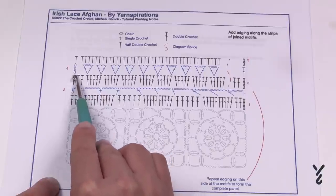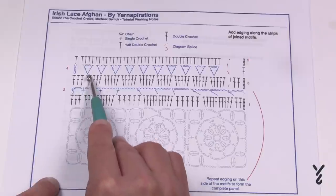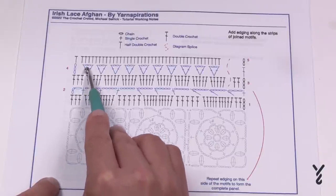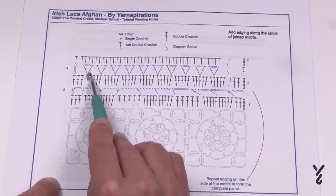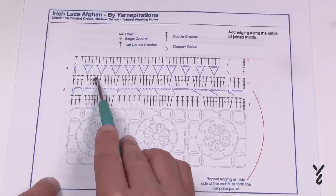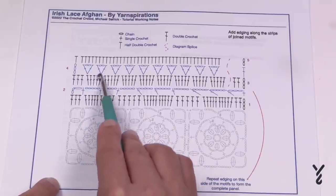When you start row number four you're going to chain up three, you'll skip two and then put this V stitch in there. So that is a double crochet chain two double crochet into the same and then you'll skip three stitches and then do the same.